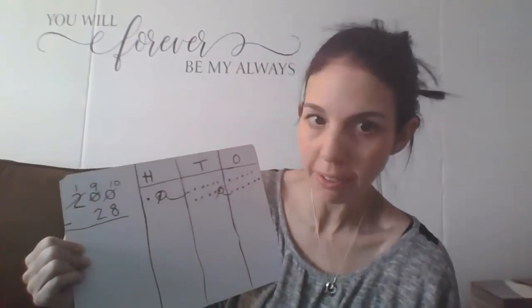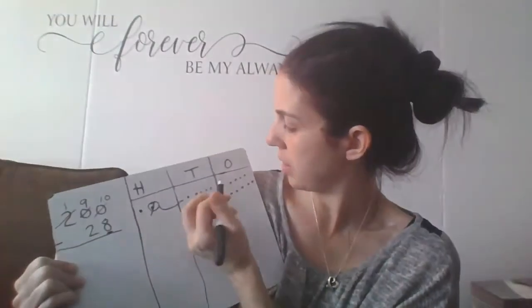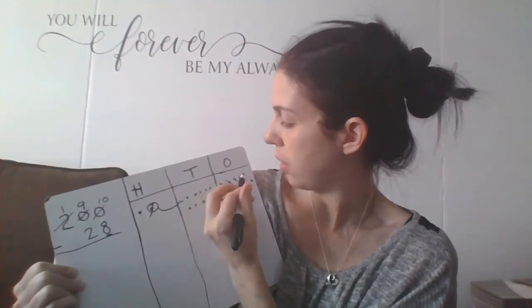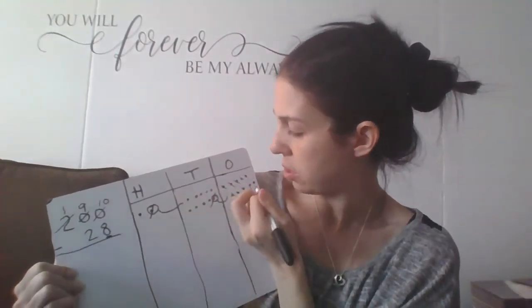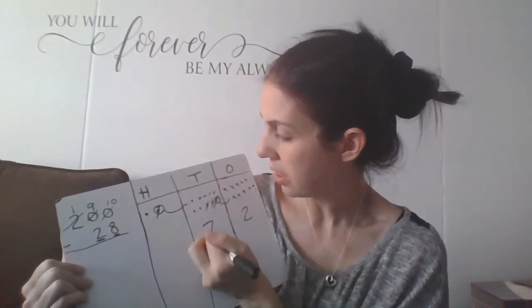And how many hundreds do I have? I have 1 hundred. Now I can cross out 8 ones: 1, 2, 3, 4, 5, 6, 7, 8. I have 2 left. And I need to take away 2 tens: 1, 2. And I have 1, 2, 3, 4, 5, 6, 7 left.